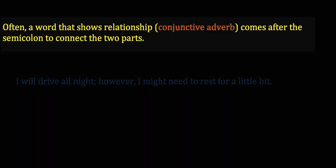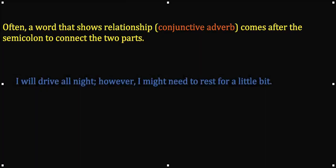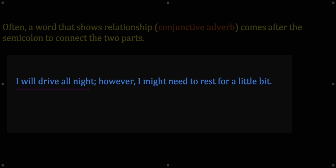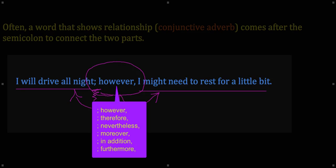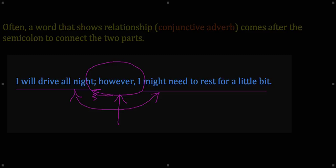Now, the notion that the semicolon is used between two complete sentences that are closely related applies here: often a word that shows relationship comes after the semicolon to connect the two parts. Here we have a complete sentence: 'I will drive all night.' Here we have a complete sentence: 'I might need to rest for a little bit.' The two are closely related, and the word 'however' is establishing that relationship. So a semicolon is used — and these are conjunctive adverbs like however, therefore, moreover, nevertheless — words that only exist to connect what came before with what comes afterwards.